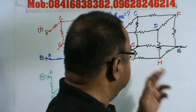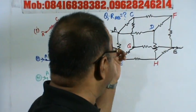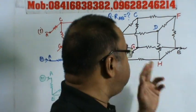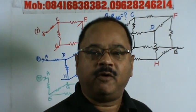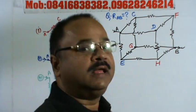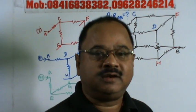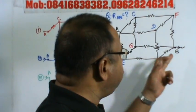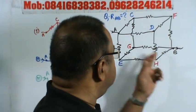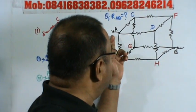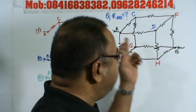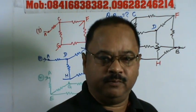Friends, in this problem there is a network of resistances connected in the form of a cube, and you have to find the equivalent resistance of the circuit across AB. AB is the point of opposite diagonals of the cube.